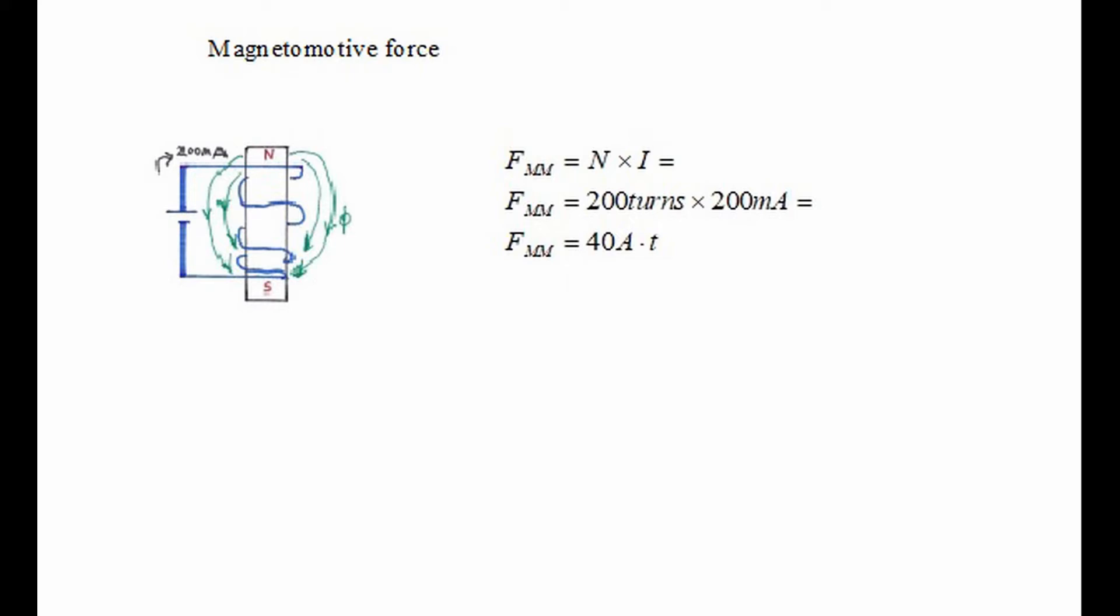Suppose I take an iron rod and wrap wire around it and then connect to a source of DC current. A DC current will induce a magnetic field in the iron. The magnetic field is called flux and flux consists of many lines of force.